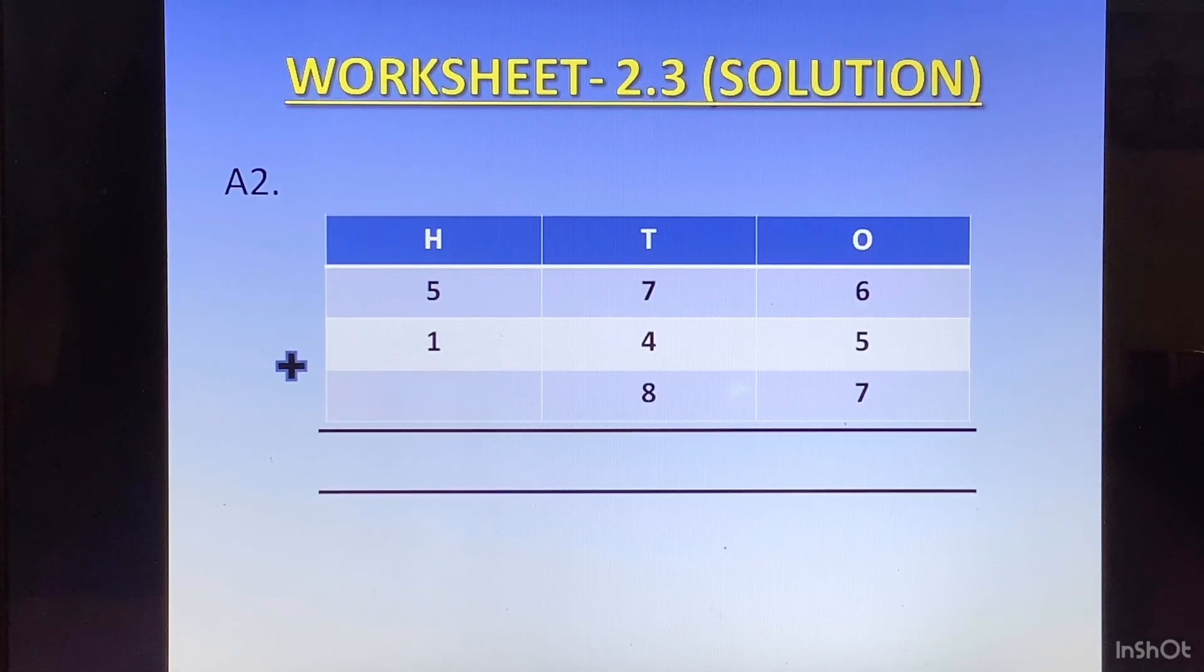Now we will see the calculation part. We will start from the ones column. We have 6 plus 5 which is 11, plus 7 is 18. 1 at the top of tens column and 8 at the bottom of ones column.